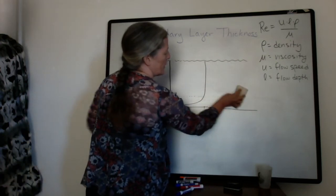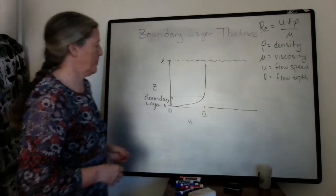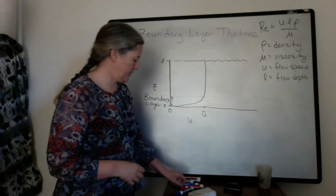So if we look at our Reynolds number, one of the ways that we can increase the Reynolds number, which is a measure of the turbulence, is to increase the flow speed.